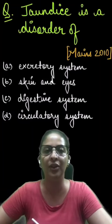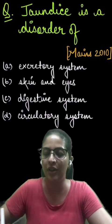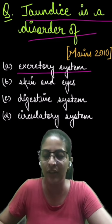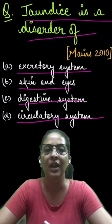Hey everyone, this is your Shruti ma'am and today we are going to solve this question in one minute. The question says jaundice is a disorder of, and the options are A. Excretory system, B. Skin and eyes, C. Digestive system, and D. Circulatory system.